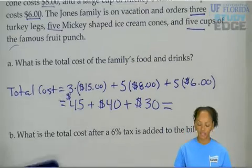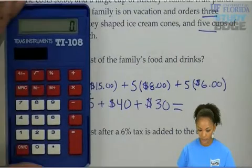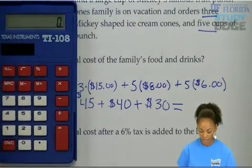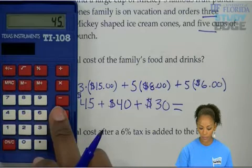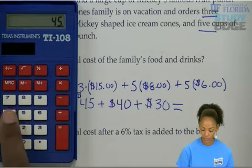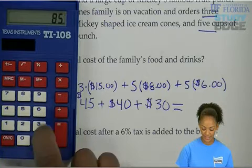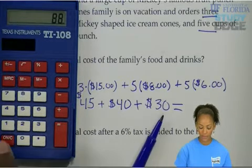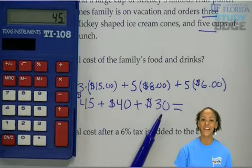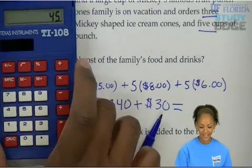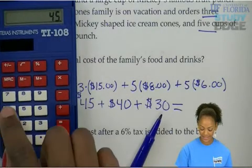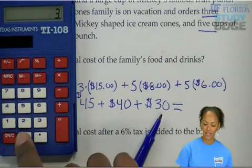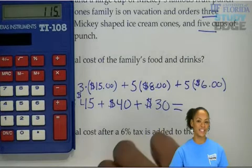If we add them all up, that should give us the total cost. So $45.00 plus $40.00 plus $30.00. Plus $40.00 plus $30.00. So they spent $115.00.